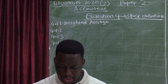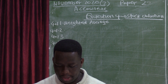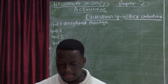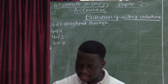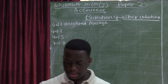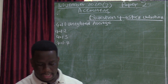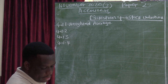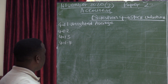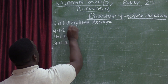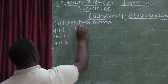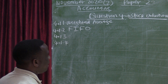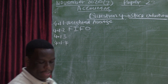4.1.2: the closing stock balance is recorded at the most recent price paid. That is first in, first out — FIFO. The closing stock balance is recorded at the most recent prices paid, so we are looking at FIFO, which is first in, first out.